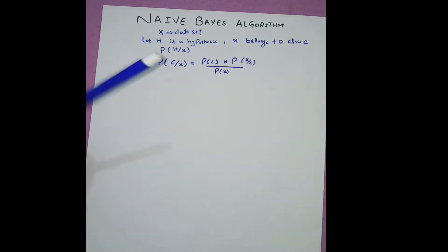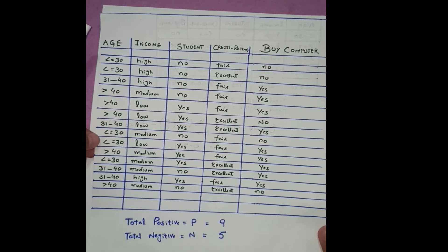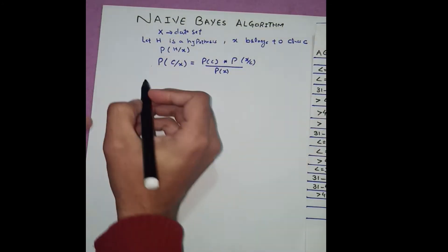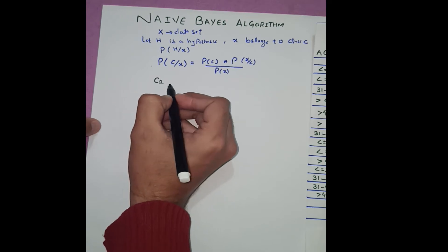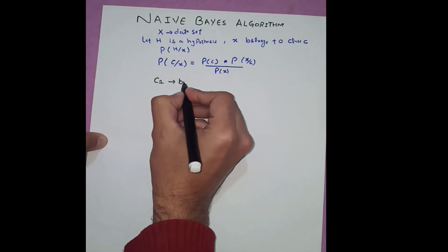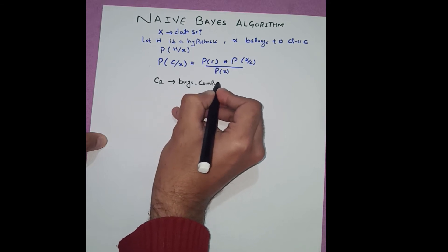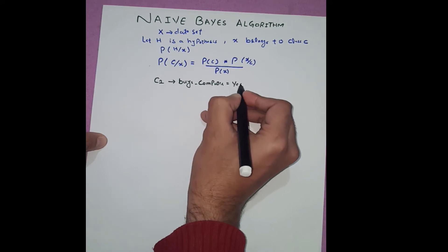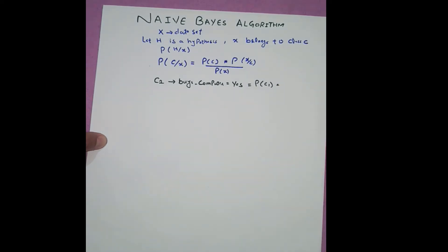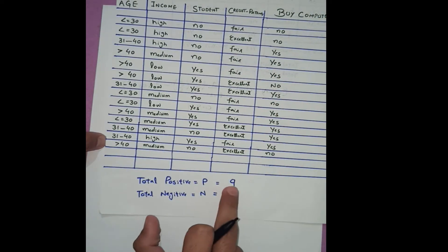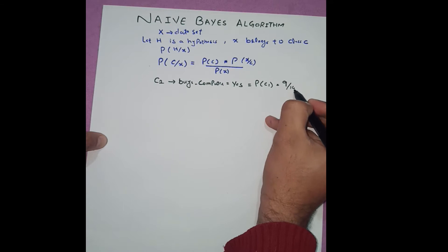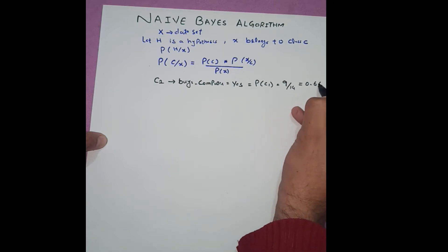That looks complicated but it is very simple. The first step is to determine the probability of positive and negative. I make class C1 where 'buys computer = yes'. The probability P(C1) equals how many times 'buys computer = yes', which is nine, over the overall data of 14. So P(C1) = 9/14 = 0.643.